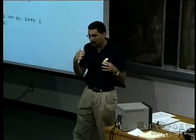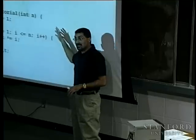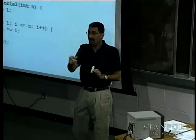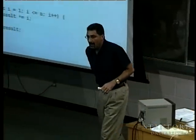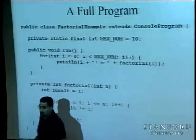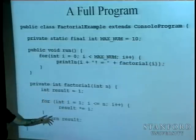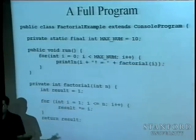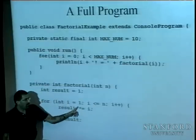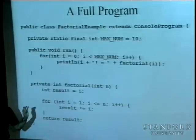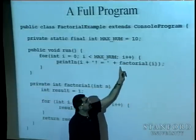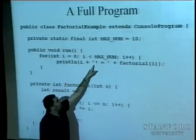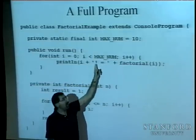When we return `result` from factorial, that value goes back to the place the function was called — up in the run method. If i was 2, factorial computed 1×1×2 = 2, returned 2, and that 2 goes back to the println call in run, which prints '2! = 2' on the screen.